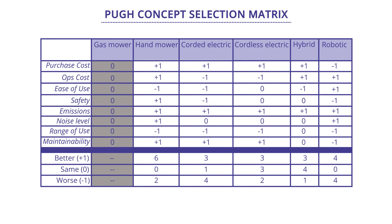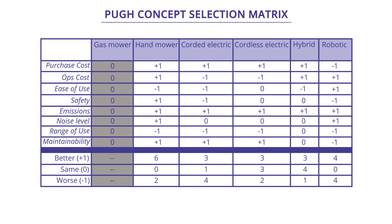In the graphic, you'll see an example of an unweighted matrix. Along the left side are the criteria you're evaluating your options with. In the gray shaded column is your baseline concept, and all options appear on the top row. This is a case where we're looking at replacing our current lawn mower with a new option. In the bottom half, we tally better, same, and worse scoring for each option. The hand mower has six things that get better, none the same, and two that get worse. The hybrid mower has three better, four the same, and one worse. Which one would you pick? It's not a simple answer, and you need more dialogue to reach a preferred solution.